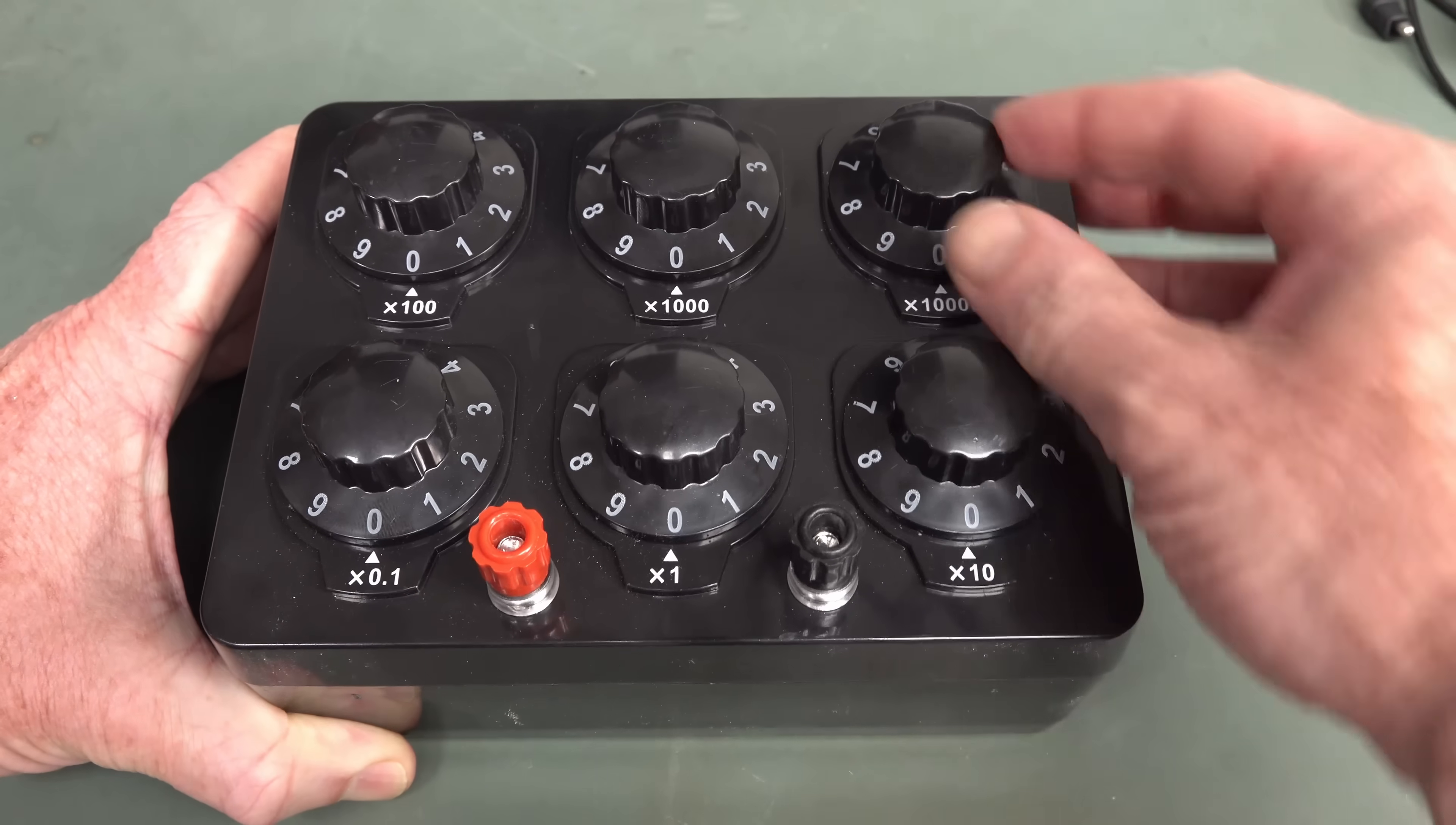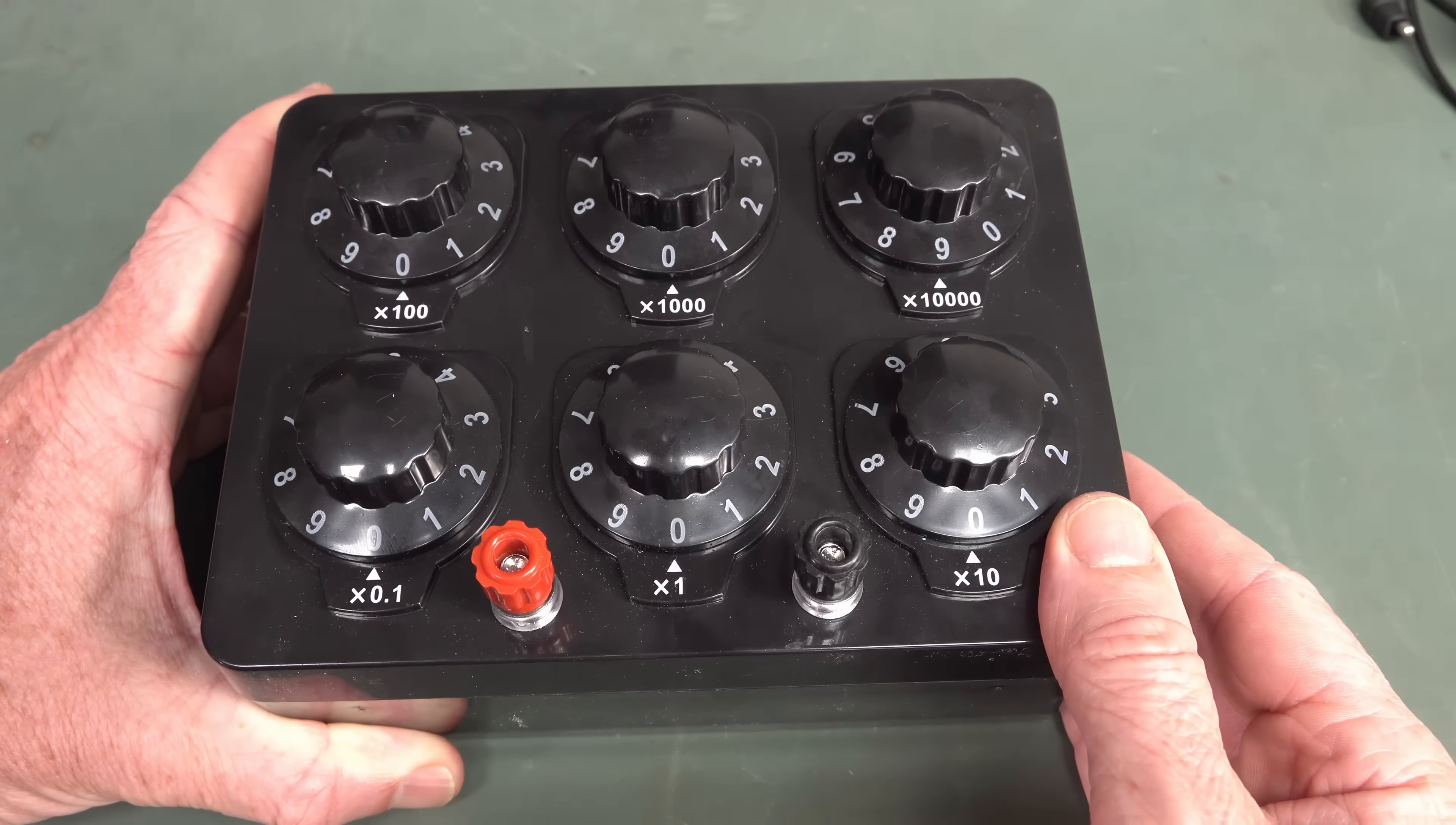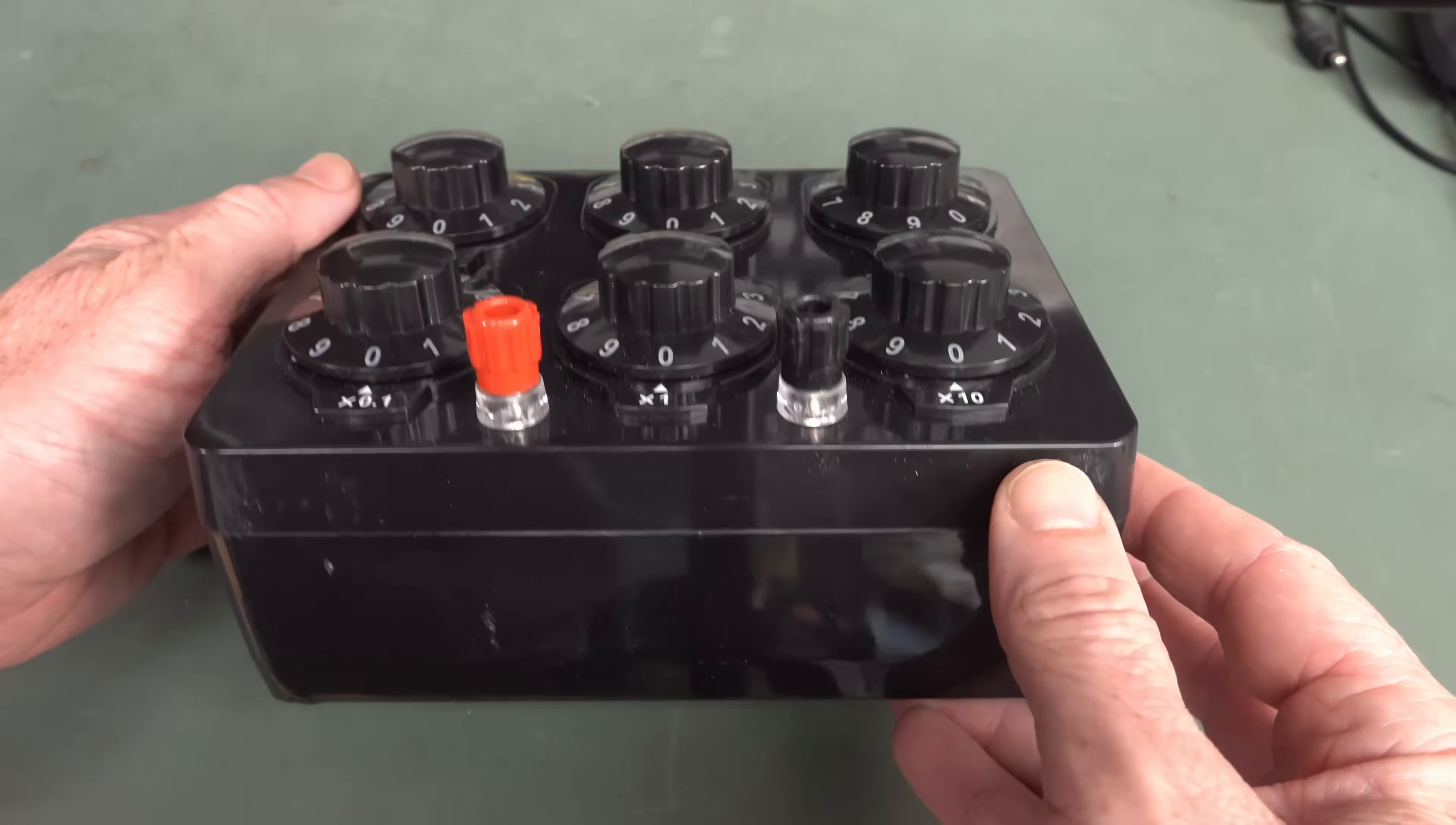This one has 0.1 ohm increments, 1 ohm, 10 ohm, 100 ohm, 1K, and 10K increments. So it goes from 0.1 ohms up to 100K. Basically 0.1 ohms to 100K here. I would have preferred to have 1 ohm to 1 meg, that would have been more useful. At this price, you get what you get and you don't get upset.